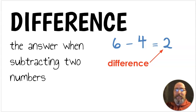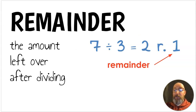Next, we have the word difference. A difference is the answer when subtracting two numbers. I have an example here, 6 minus 4 equals 2. The answer to the subtraction question is the difference. Next, we have remainder. A remainder is the amount left over after dividing. If I were to divide 7 divided by 3, 3 doesn't go into 7, but it gets close. If I divide it by 2, that would be 6 because 3 times 2 is 6, which would give me 2 with a remainder of 1. 1 is what's left over. It's the remainder.